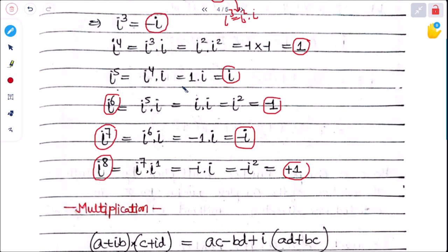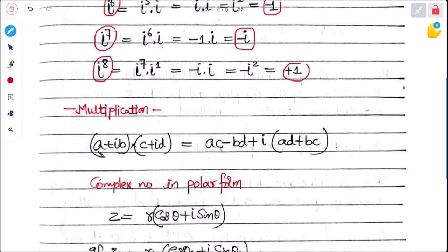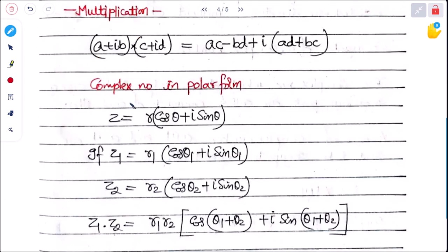Multiplication of two complex numbers: (a + ib)(c + id) = (ac − bd) + i(ad + bc). In polar form, if z₁ = r₁(cosθ₁ + i sinθ₁) and z₂ = r₂(cosθ₂ + i sinθ₂), then z₁·z₂ = r₁r₂[cos(θ₁ + θ₂) + i sin(θ₁ + θ₂)].